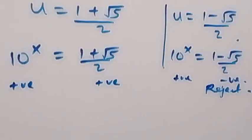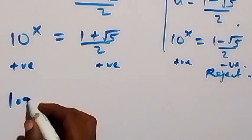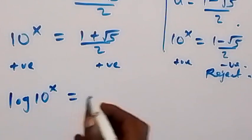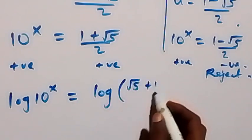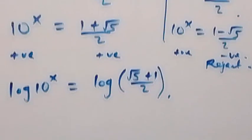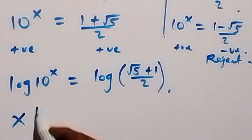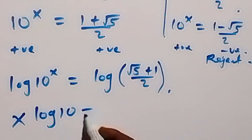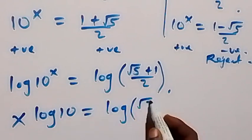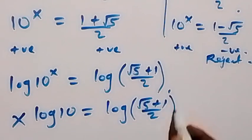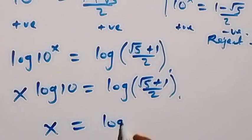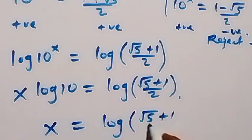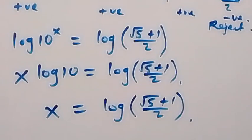From the valid equation, we take the log on both sides: log of 10 raised to power x equals to log of root 5 plus 1 over 2. The power x comes down: x log 10 equals to log of root 5 plus 1 over 2. Since log 10 is 1, this simplifies to x equals to log of root 5 plus 1 over 2. This is the same result as in Method 1.